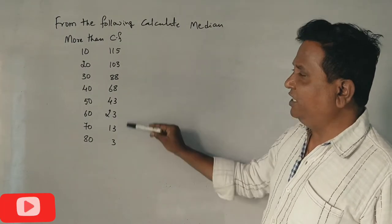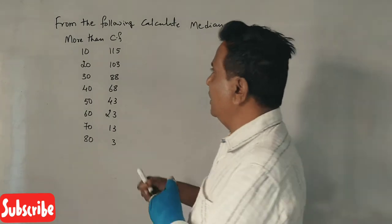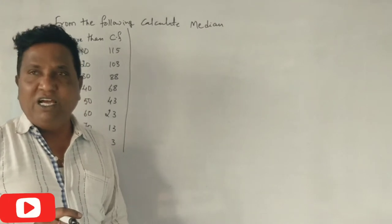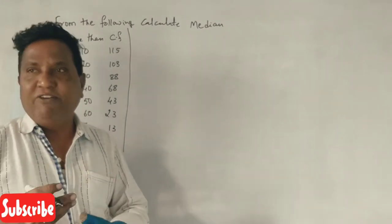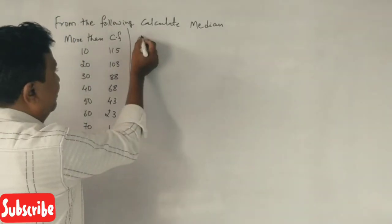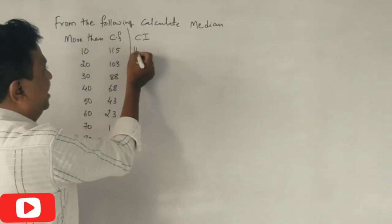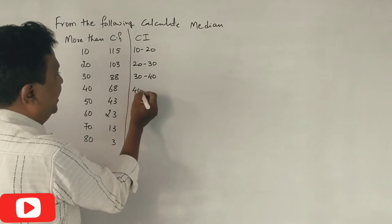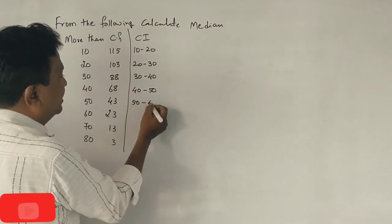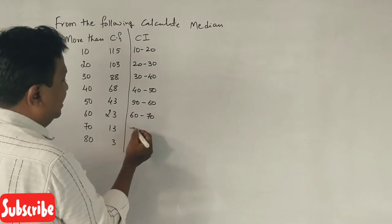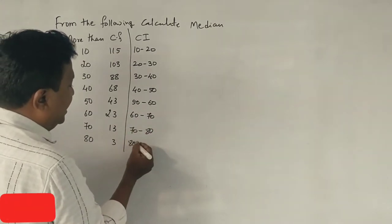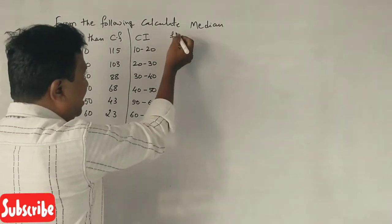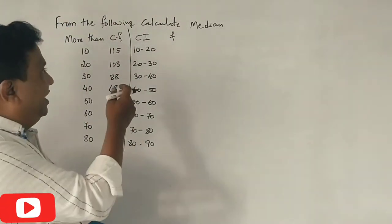Now we need to accumulate the frequency. We need to convert the frequency to normal frequency. 10 to 20, 20 to 30, 30 to 40, 40 to 50, 50 to 60, 60 to 70, 70 to 80. In this case, the frequency becomes the frequency. This is already cumulative.